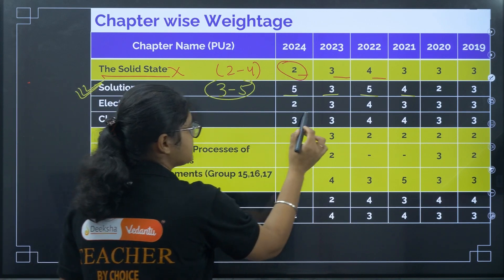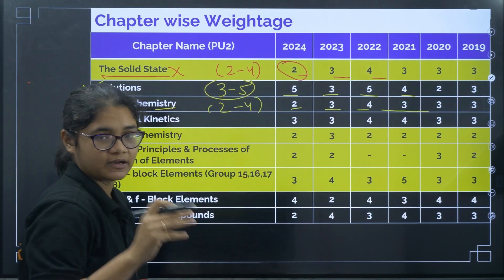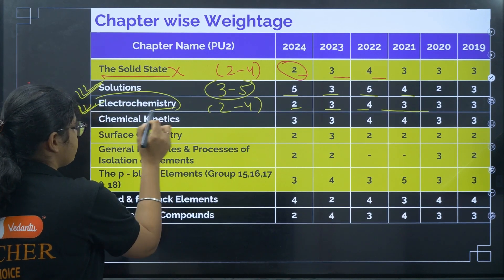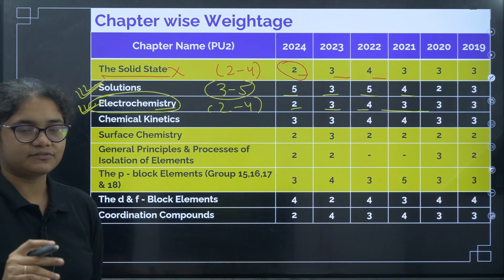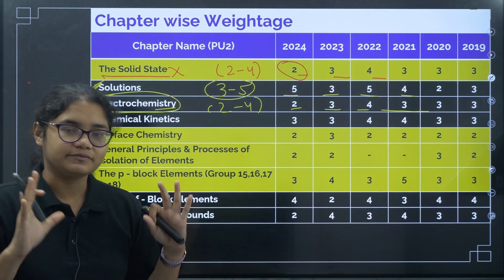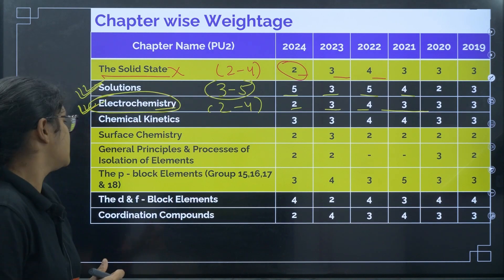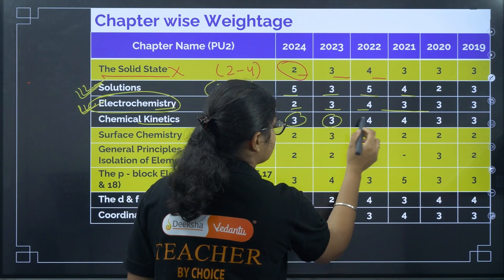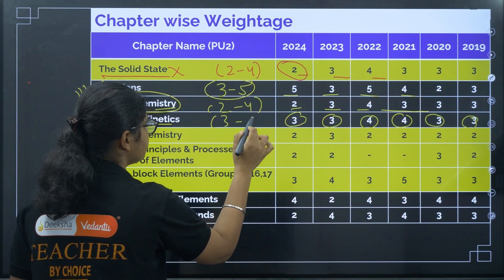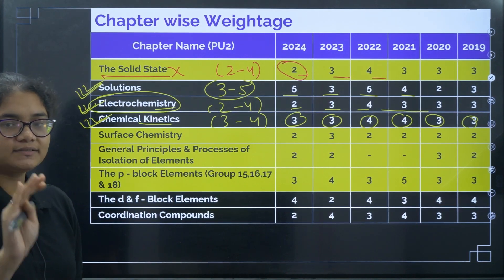Electrochemistry — looking at the last six years: 2, 3, 4, 3, 3, 3 questions. So we can expect two to four questions — again a very high weightage, must-do topic. Students generally find electrochemistry difficult because of its complex formulas, but if you understand the concepts, it is very easy to apply them as direct questions have been asked. Chemical Kinetics shows 3, 3, 4, 4, 3, 3 in the last six years — an average of three to four questions. Easy and very scoring topic.